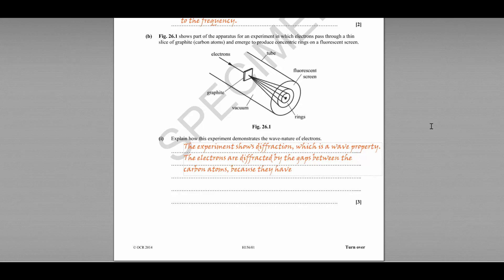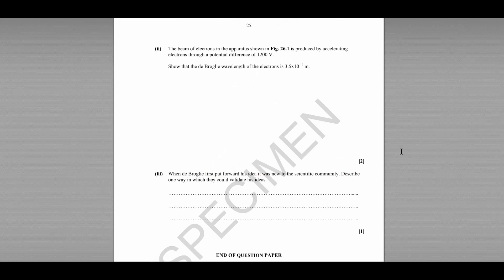Because they have a de Broglie wavelength similar to this spacing. So diffraction occurs when waves have a wavelength similar to the space through which the waves are passing. In this case, the spacing between the atoms is similar to the de Broglie wavelength of the electrons.